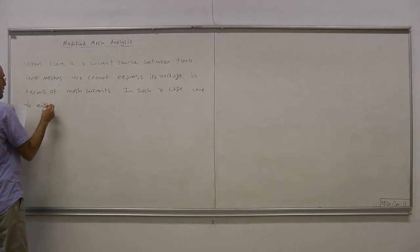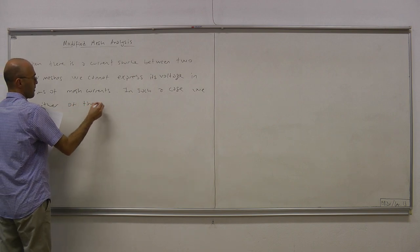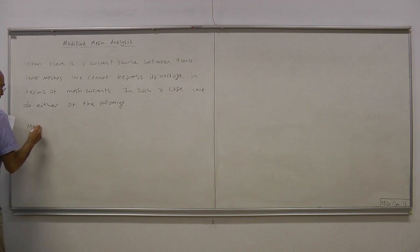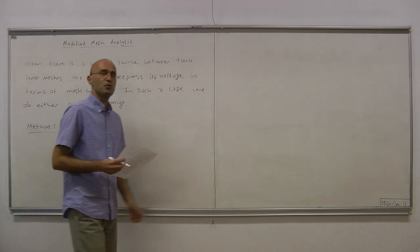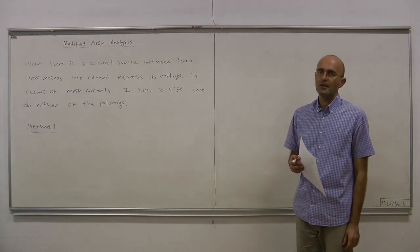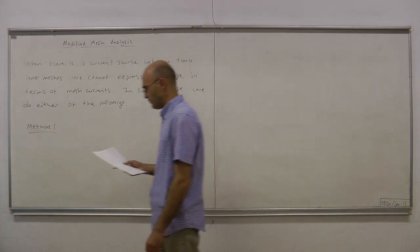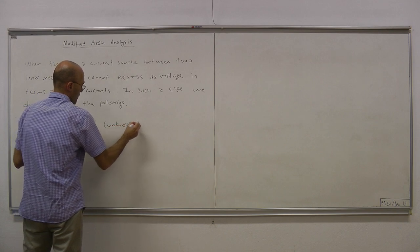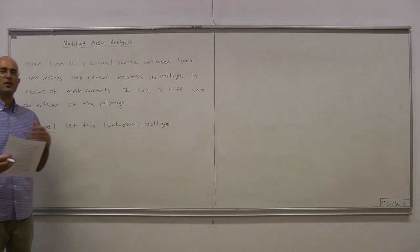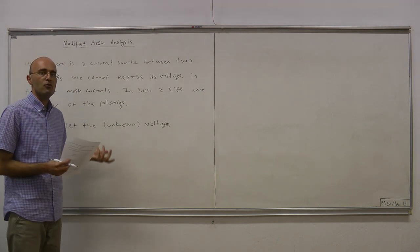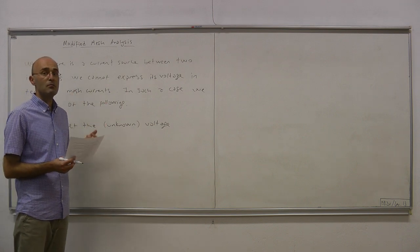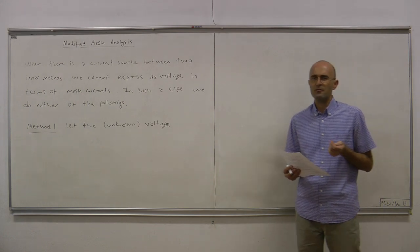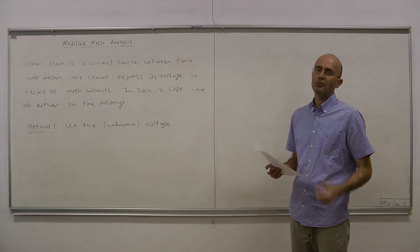We do either of the following. Here is method one, and then we have method two, which is a slight improvement of method one. Therefore, method two is usually more preferable. In method one, we let the voltage of the current source — which we cannot express in terms of mesh currents — be one of the formulation variables. By doing that, you increase the number of formulation variables, and you also have to increase the number of equations. The extra equation needed will come from the constraint equation.